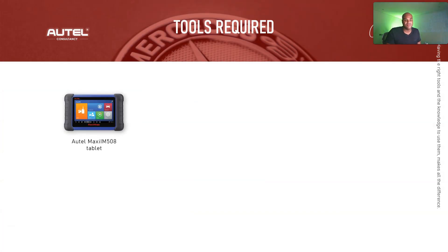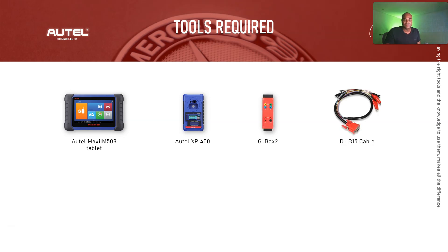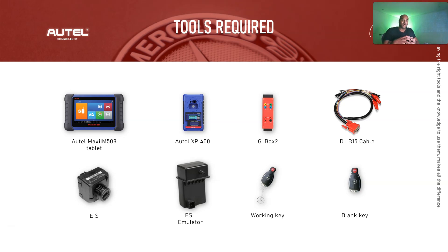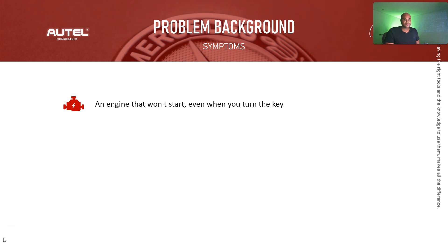The tools we're using today are the AutoTEL IM508, the XP400, the GBox 2, your DB15 cable, the original EIS module, the ESL emulator, a working key, and a blank key. For those who don't know what an emulator is — it's a specialized tool that replicates the function of the original electronic ignition switch. That original device is really expensive; this is a toned-down version with the mechanical components removed.